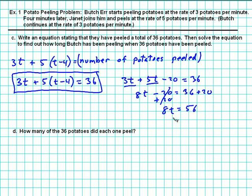So 8t is equal to 36 and 20 is 56. Okay, 8 times what is 56? We'll divide both sides by 8. So t is equal to 7.